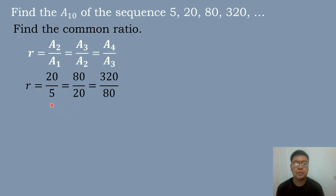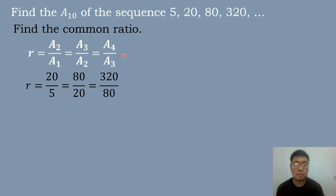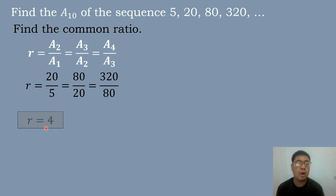We substitute the values: a sub 2 is 20, a sub 1 is 5, a sub 3 is 80, a sub 2 is 20, a sub 4 is 320, and a sub 3 is 80. Dividing: 20 divided by 5 is 4, 80 divided by 20 is 4, 320 divided by 80 is 4. So the value of the common ratio is equal to 4.